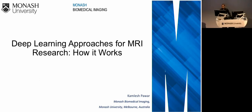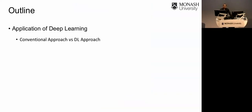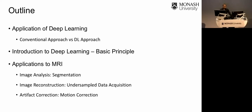Today I'm going to talk about deep learning approaches for MRI research and how it works. The outline covers applications of deep learning, the difference between conventional and deep learning approaches, an introduction to deep learning with basic principles and building blocks, and then more specific applications to MRI: image analysis, image reconstruction, and motion correction.